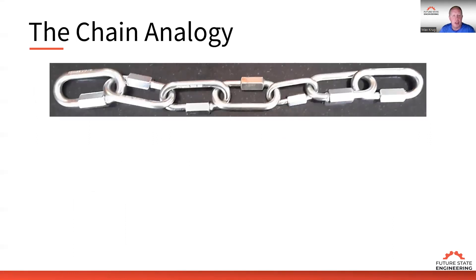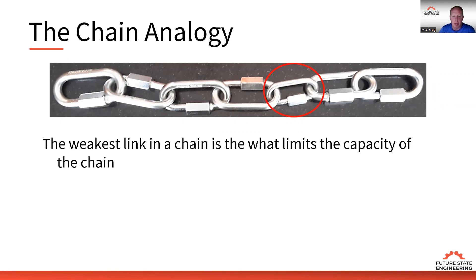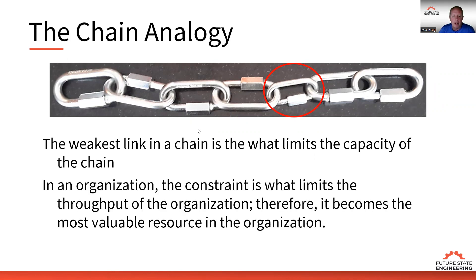We're going to start out by looking at the chain analogy. When we look at the chain, we have a bunch of dependent resources with interrelationships and interdependencies, and in any system there can only be one weakest link. That weakest link determines the capacity of the system or the capacity of your organization. If you know where that weakest link is, that determines the output of your whole organization. In an organization, the constraint limits the throughput and therefore becomes the most valuable resource.